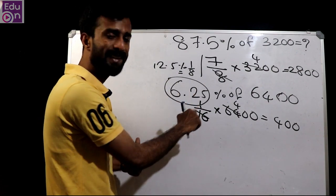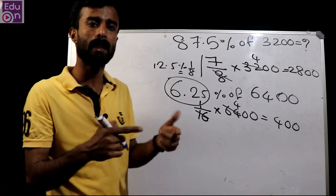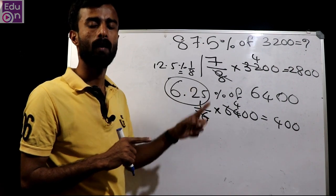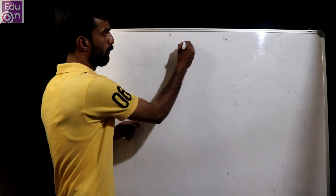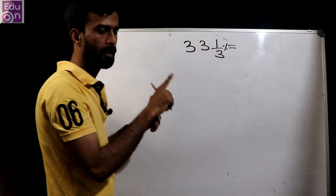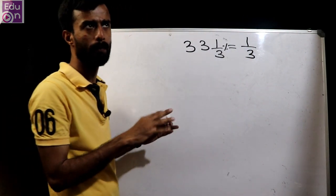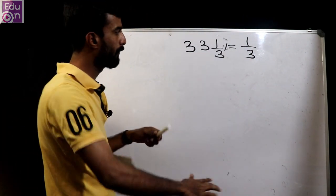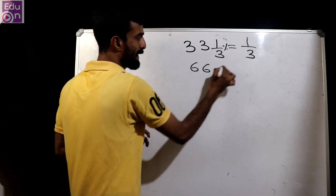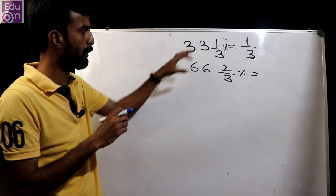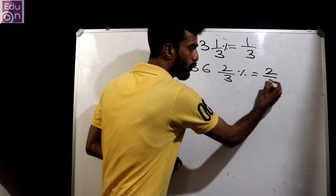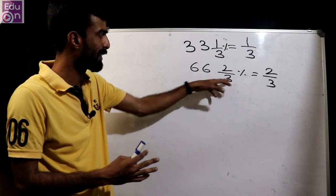1 by 16 is used here. Then we have 33 and 1/3 percentage, which is 1 by 3. And 66 and 2/3 percentage is 2 by 3. So 1/3 and 2/3 make up the chart for 66 by 100.